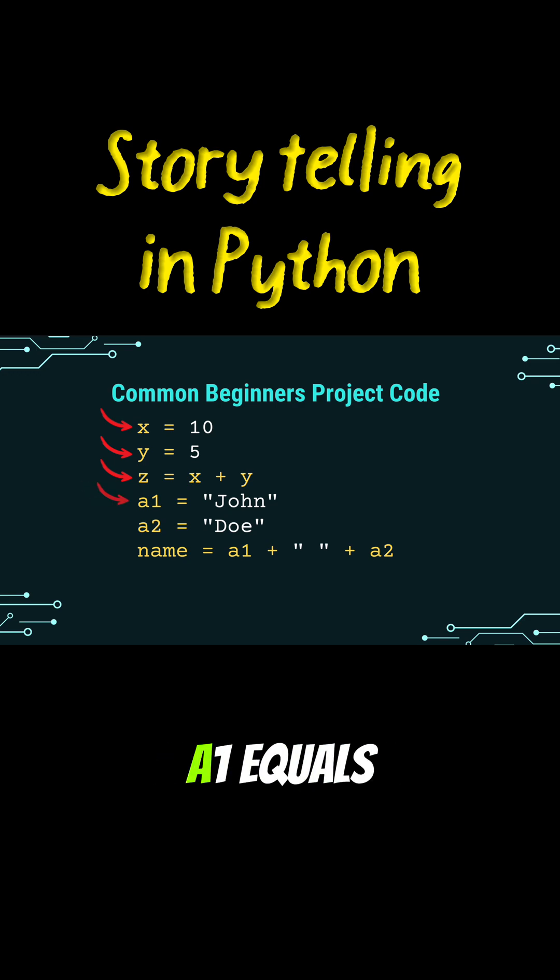For names, we might see a1 equals John and a2 equals Do. While this code works perfectly fine, it's not very clear.